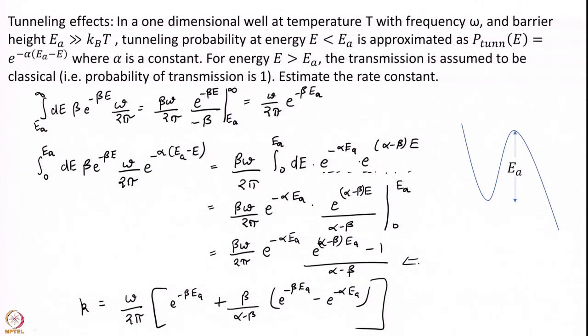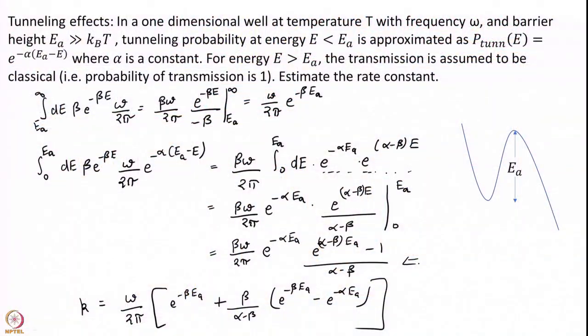The important concept here is the setup: we calculate the rate constant as an integral over all energies. For E less than Ea we estimated K(E) as omega over 2 pi multiplied by the tunneling probability, and for E greater than Ea we simply took omega over 2 pi. Once you have that, the rest is just numerical integration.